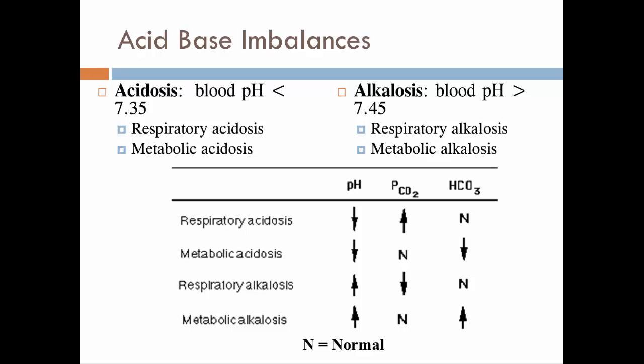So acidosis, again, is pH below 7.35, and alkalosis, higher than 7.45. And to differentiate the four, then, we can look at pH, partial pressure of CO2, and bicarbonates.